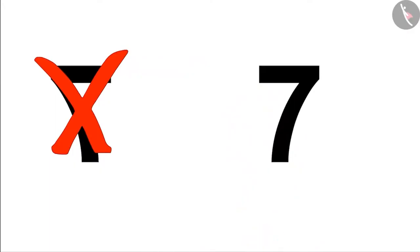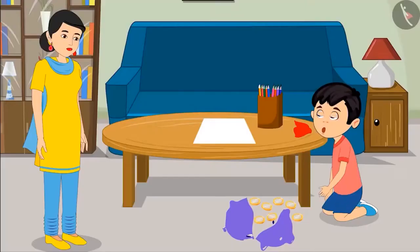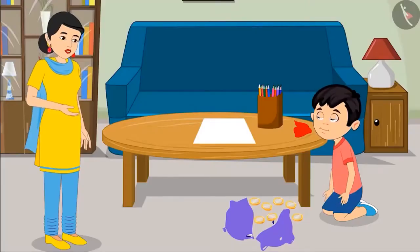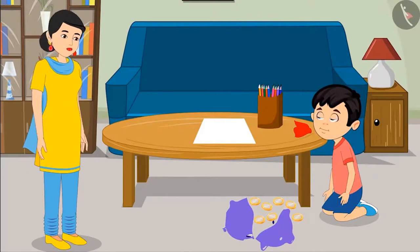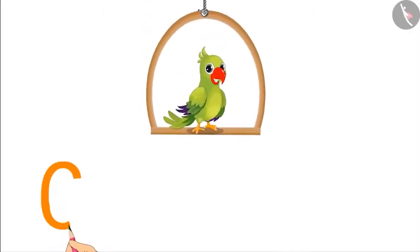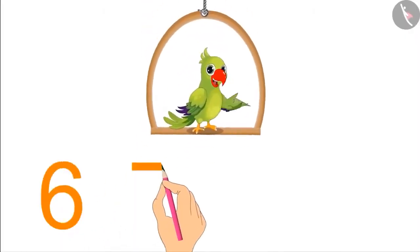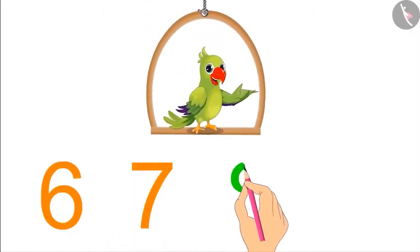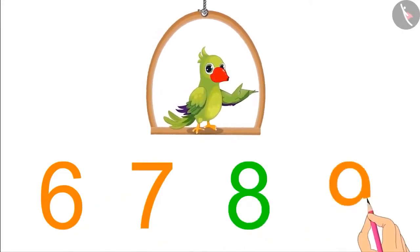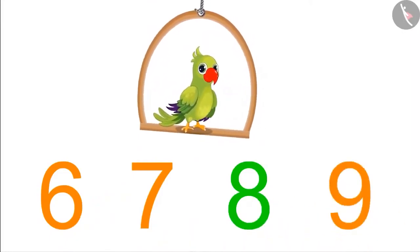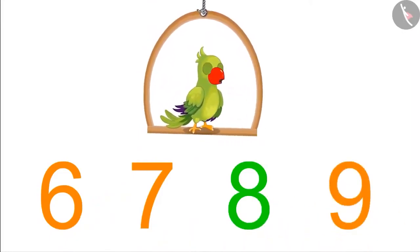Chotu writes the number, but his mother says: Chotu, you have written seven in reverse — it is written correctly like this. Do you understand? Yes, Mom. Can you write numbers from six to nine properly on a piece of paper? Be careful not to write any number in reverse like Chotu.